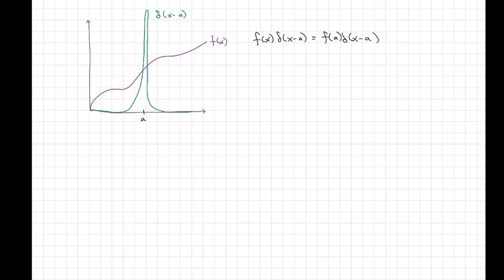In other words, if I were to multiply a function, just any function, by my shifted Dirac Delta, I'm going to end up getting just the function evaluated at a times the Dirac Delta, which is still going to be infinity. This also works of course if I take a to zero.